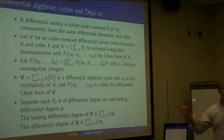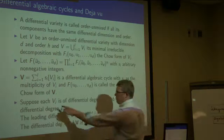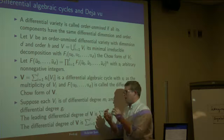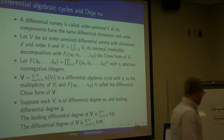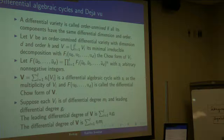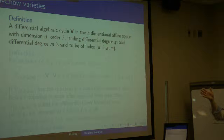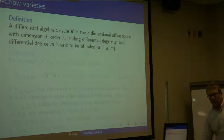The m_i is the differential degree of V_i and g_i is the leading differential degree. In the Chow form of V_i, this is the differential homogeneity degree in each of the variables u_i bar, and this is the degree of the h-th derivative of a particular variable. A differential algebraic cycle has a fixed index: d is the dimension, h is the order, g is the leading differential degree, and m is the differential degree.